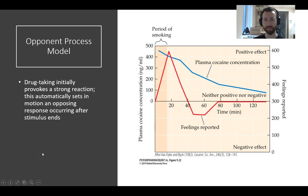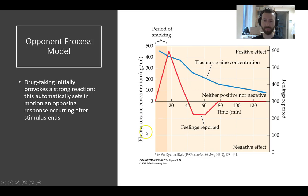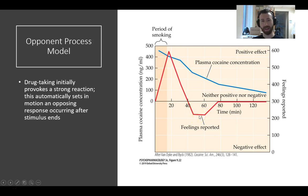This is sometimes conceptualized as an opponent process model, meaning two opposing processes are working at the same time. Drug-taking initially provokes a strong reaction and automatically sets into motion an opposing response that occurs after the stimulus ends. On this graph, depicting an individual in a study who is allowed to smoke cocaine, immediately after the smoking period the plasma concentration of cocaine peaks and their subjective feeling of 'feeling good' peaks too. But as the opponent process sets in, it rapidly crashes and causes a negative affect state — notably while cocaine concentrations are still rather high — and then evens out into a neither positive nor negative state.